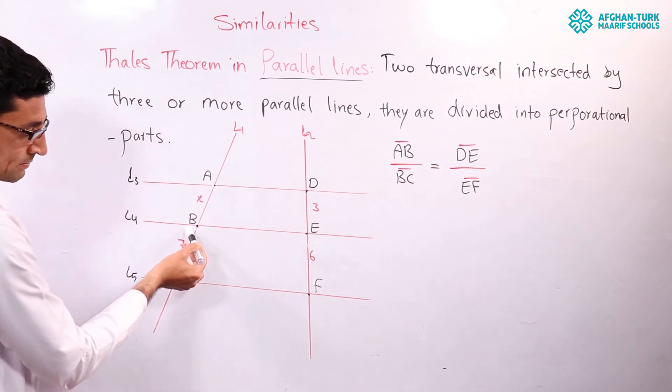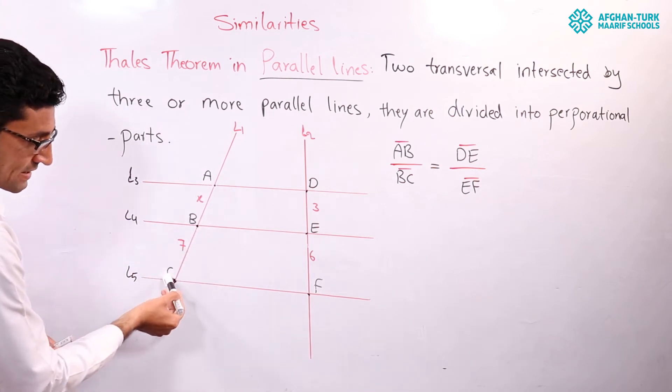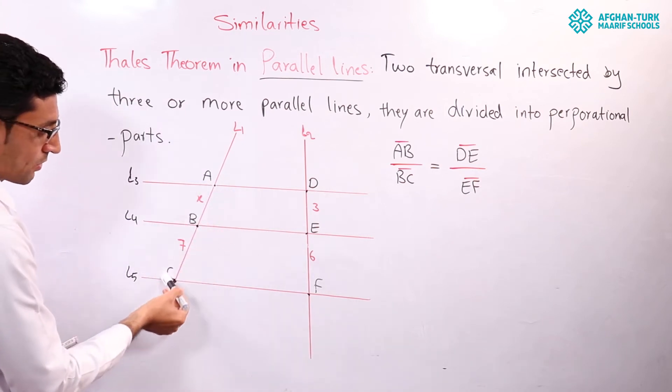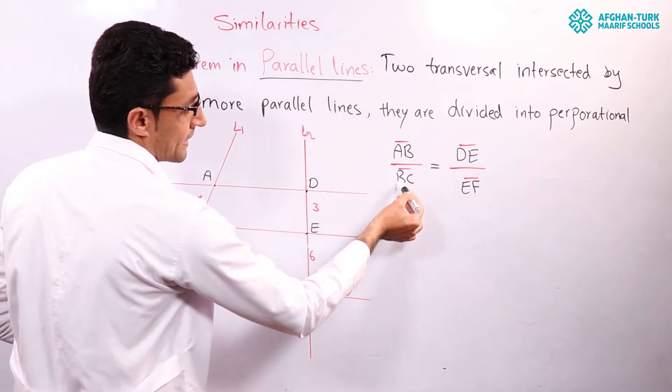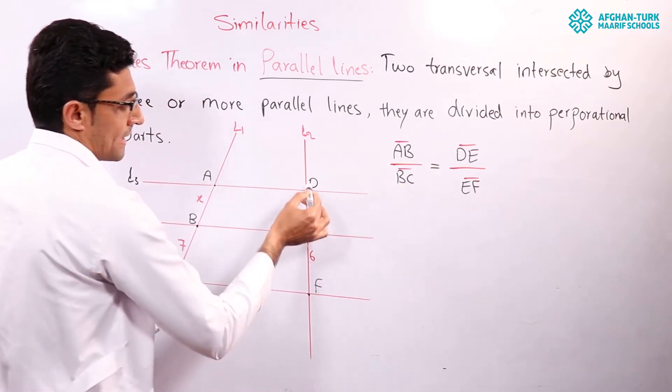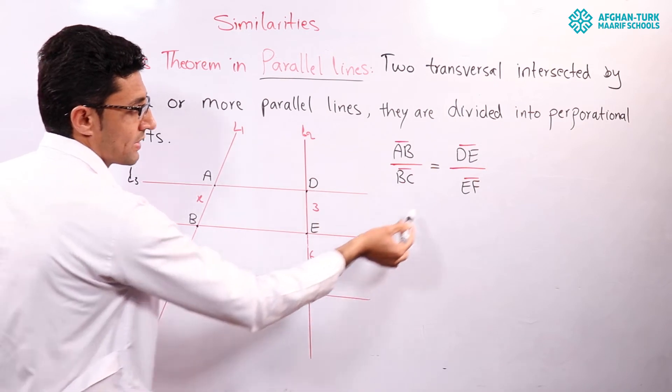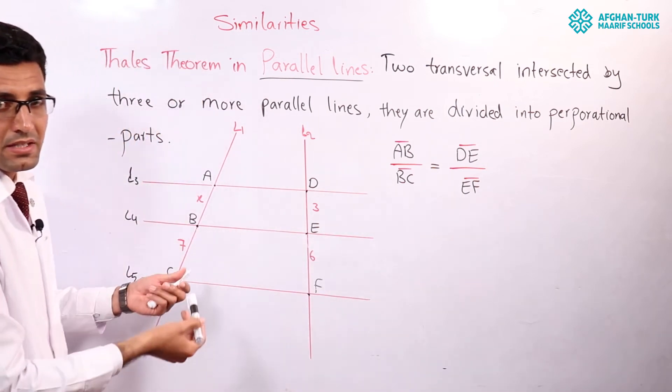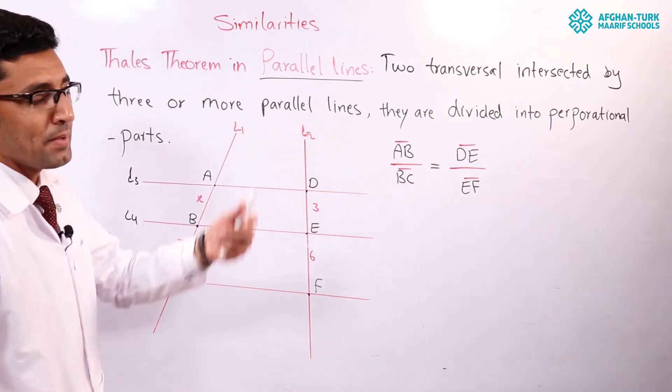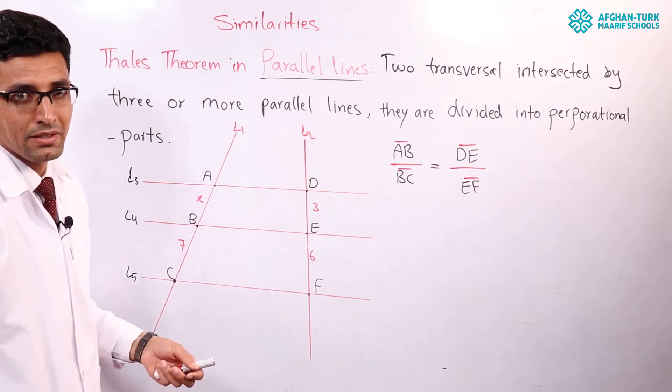What happens? AB over BC. AB over BC, and here you see, is equal to DE over EF. This is Thales theorem in parallel lines. Very simple.